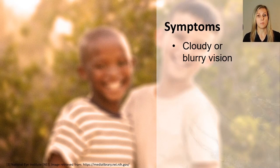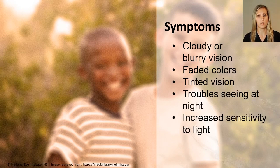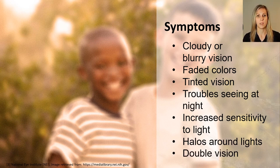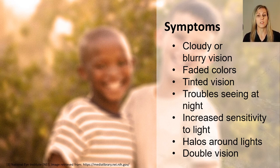Cataracts can cause symptoms such as cloudy or blurry vision, faded colors, tinted vision, trouble seeing at night, increased sensitivity to light, halos around lights, or double vision. For our society to be more inclusive and accessible, the more than 2.2 billion people with limited vision should be considered more frequently in design decisions such as architectural planning. But vision impairments can be difficult for patients to describe and others to visualize.